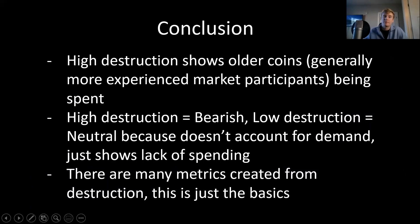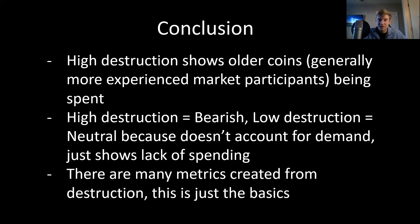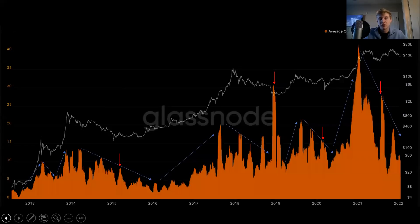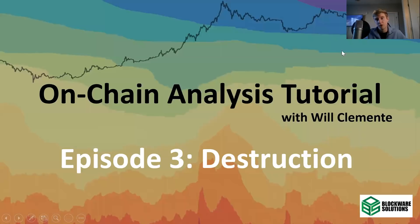In conclusion, high destruction shows that older coins, which are generally more experienced market participants, are being spent — high destruction equals bearish. Low destruction equals neutral because it doesn't account for demand; it just shows a lack of spending. There are many metrics created from destruction, and this is just looking at the basics. In future videos we'll use this as a foundational building block to build off of when we start talking about broader, more sophisticated indicators built off of destruction. Really appreciate you guys taking the time to watch. Hope you got something out of it. Like, subscribe, and let me know any other metrics you'd like to see covered. Hope you guys have a great day — take it easy, bye-bye.